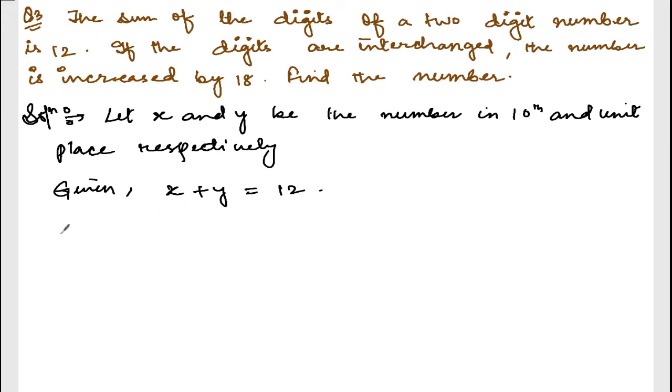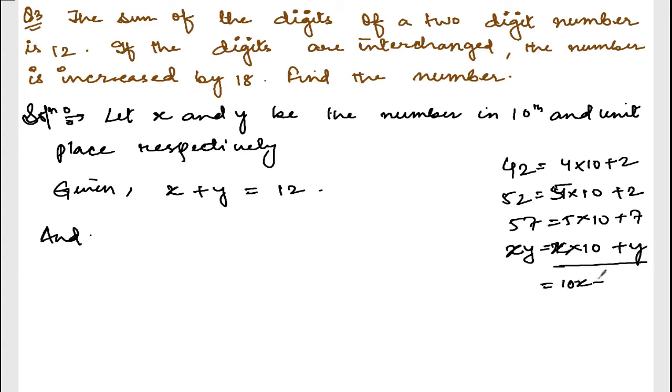Let me give you an example. Let's say 42. How you are going to write this number? 4 into 10 plus 2. Similarly, 52 is 5 into 10 plus 2. 57 is 5 into 10 plus 7. Similarly, x, y can be written as x into 10 plus y, or 10x plus y. Let me interchange this number. So it will be y, x. Y will be in the 10th place, x will be in the unit place. So I can write down 10y plus x.